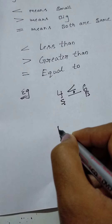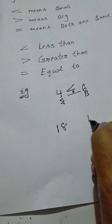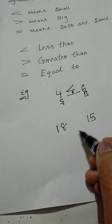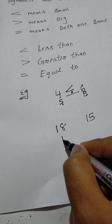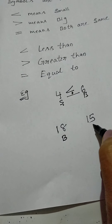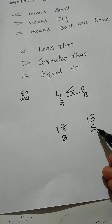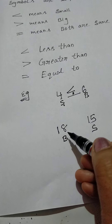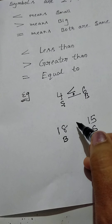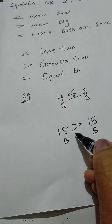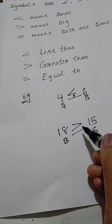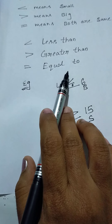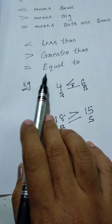Next one — what is this? Greater than. Second example of greater than. Take the numbers 18 and 15. Compare these two numbers: which one is smallest, which one is biggest? 18 is the biggest number and 15 is the smallest number. So, the first number is the biggest number, and in this situation use greater than.